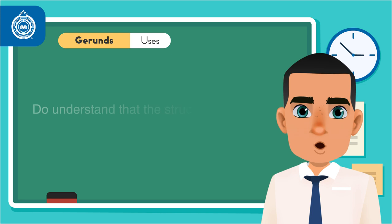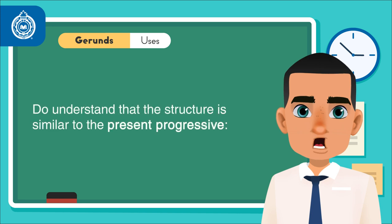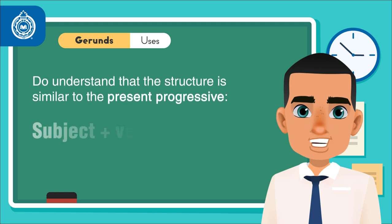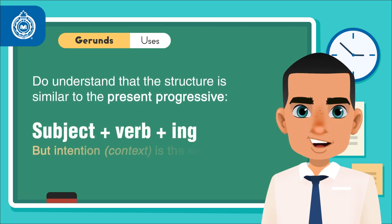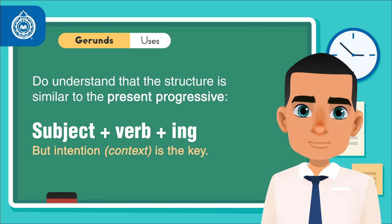Understand that the structure, its composition, is similar to present progressive: subject plus verb plus -ing. But intention and context is the key. See below for more examples.